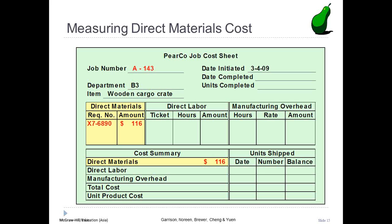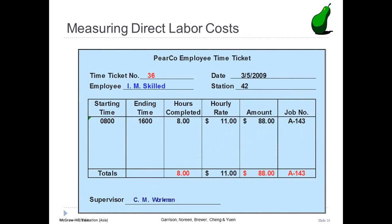The material requisition number X76890 is included on the job cost sheet to provide easy access to the source document. If we need to look at the details of the $116 cost, we can refer to that requisition form. Workers use time tickets to record the amount of time spent on each job. Here is the time ticket for an employee who worked 8 hours on job A143. The employee's hourly pay rate is $11, so the total cost charged to the job is $88. Time ticket number 36 serves as the major source document for labor costs.